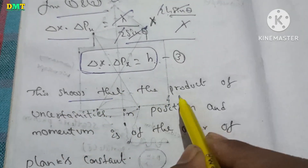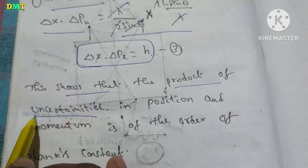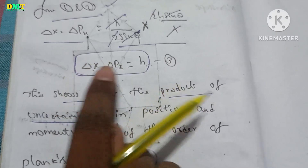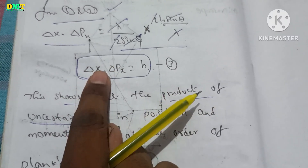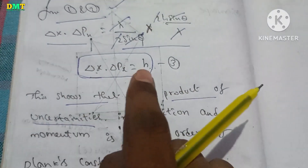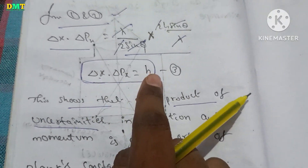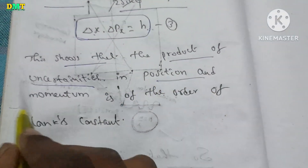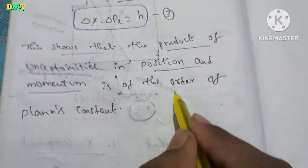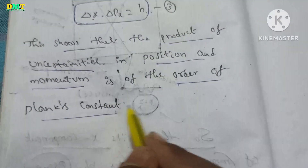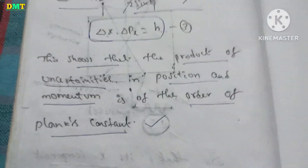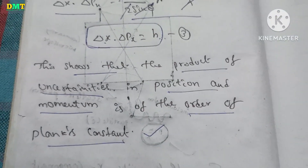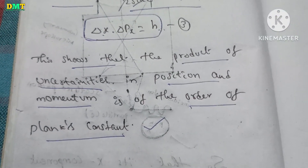This shows that the product of the two uncertainties is equal to h — Planck's constant. In position and momentum, the product of uncertainties is of the order of Planck's constant. This is already the statement of the Heisenberg uncertainty principle.